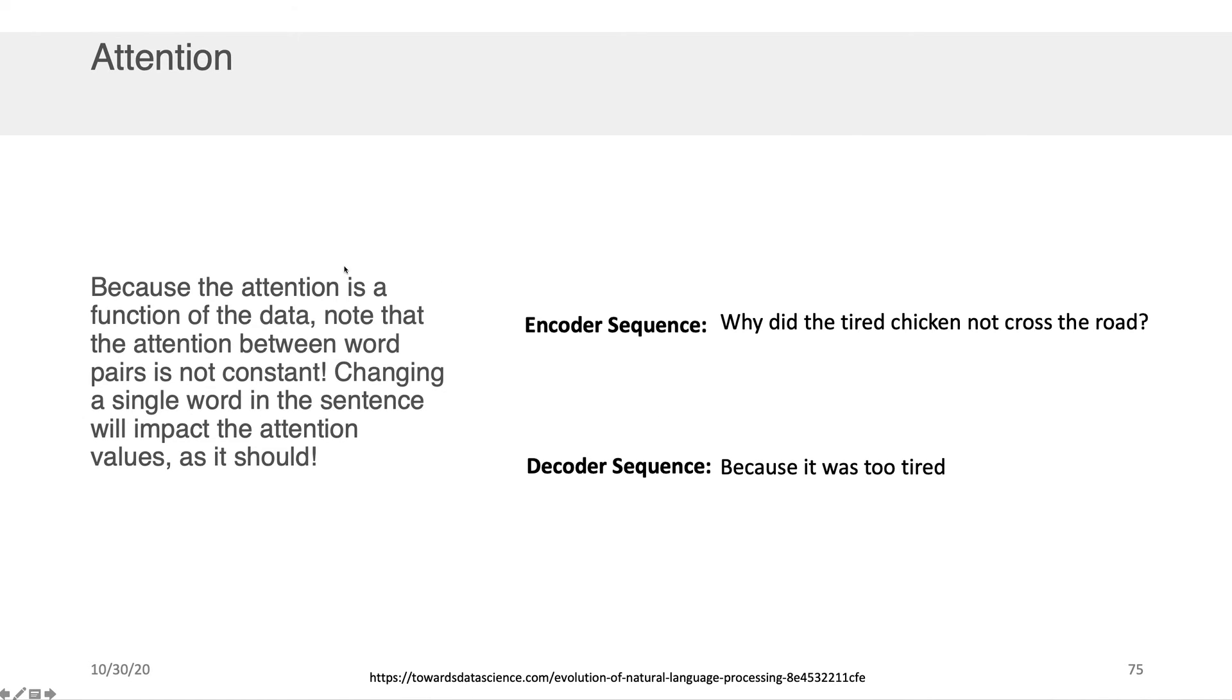Now I want to point out a subtlety here, which is sometimes lost on people with attention, which is that attention is a function of the data in addition to the parameters of that matrix A that we had discussed that comes up with the relationship between what's important on the decoder side and how that is related to the encoder side. This is important because if you change a single word in the encoder sequence, what the decoder sequence will pay attention to may change. I think the best way to understand that is with an example.